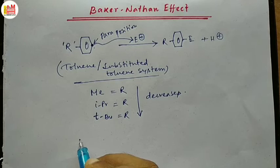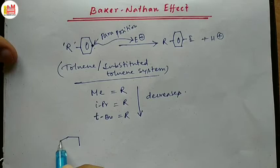They explained this phenomenon in terms of a new type of conjugation which was called hyperconjugation. We have already discussed hyperconjugation in our dedicated video — the link is in the description. Now let us see how this variation actually takes place.